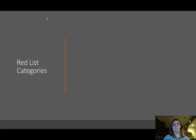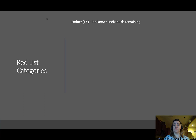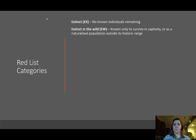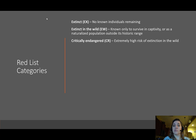On the Red List, various categories have been assigned to species based on their completed assessments. An assessment is completed by a group of scientists or interested people who do field work and monitor populations of a particular species. The highest category, and probably the scariest, is extinct, coded EX. That suggests there are no known individuals remaining anywhere on Earth and that the last individual has died.